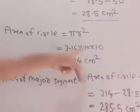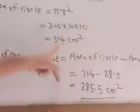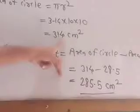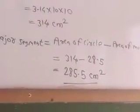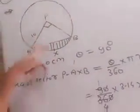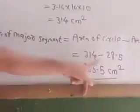Area of circle equal to pi R square. 3.14 into 10 into 10 equals 314 cm square. This is the area of circle. Then area of major segment equal to area of circle minus area of minor segment. 314 minus 28.5